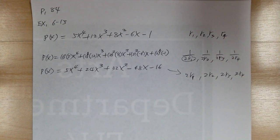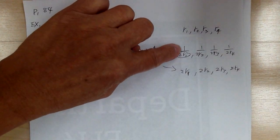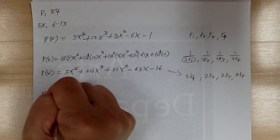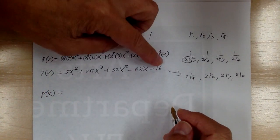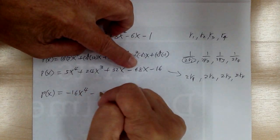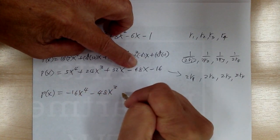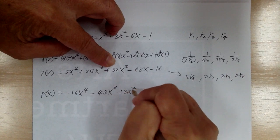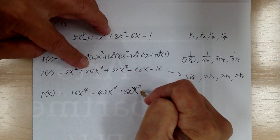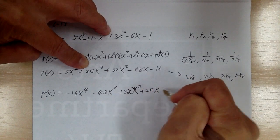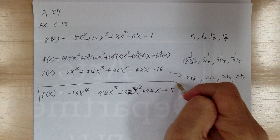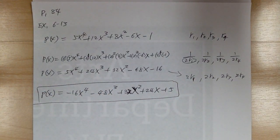Now we flip it over to get the reciprocal roots — just reverse the coefficients. So the answer is negative 16x to the four minus 48x cubed plus 32x squared plus 24x plus 5. Reciprocal roots are fairly easy — just reverse the order.